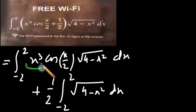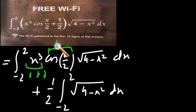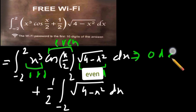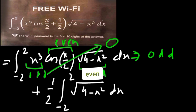The concept here is that we can separate the two functions and then integrate them separately. In the first integral, x cubed is an odd function, whereas cosine of x over 2 and root over 4 minus x squared are both even functions. By the properties of definite integrals, the integration of an odd function over a symmetric limit is always zero, so the first integral becomes zero.